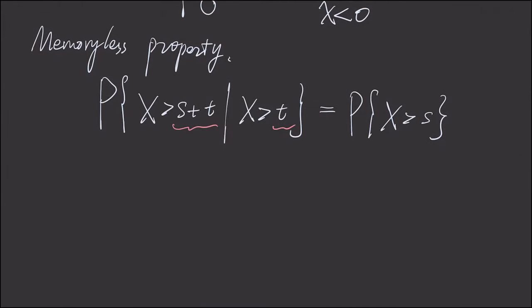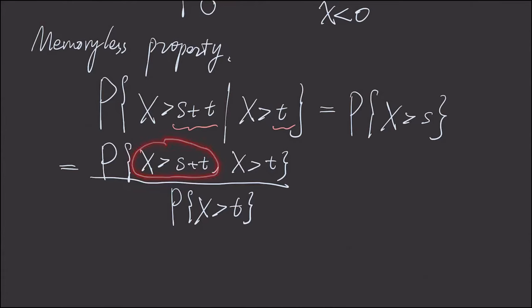And now let's prove it. To show this, it's quite straightforward. We just apply the conditional probability definition. So the left side is nothing but a fraction. That is, X is greater than s plus t and X is greater than t, divided by the probability of X is greater than t. And now let's look at the top. This event, which is X is greater than s plus t.